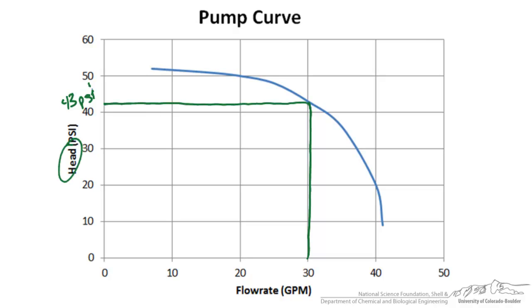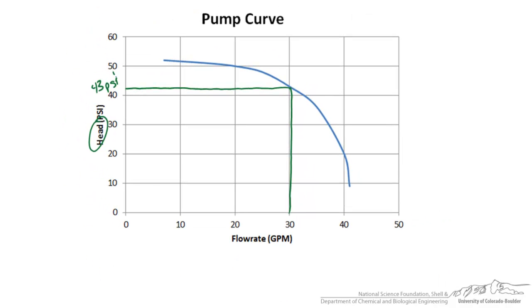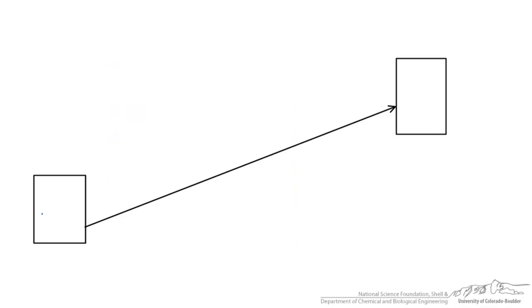Typically, on a pump curve, the head is in feet or meters. Here we designated it in psi so we can directly read off this chart. Let's draw a picture for our process so we can map this out and determine the maximum length of piping. We have a storage tank at a lower elevation than our heater, with a pump right at the outlet of the tank.